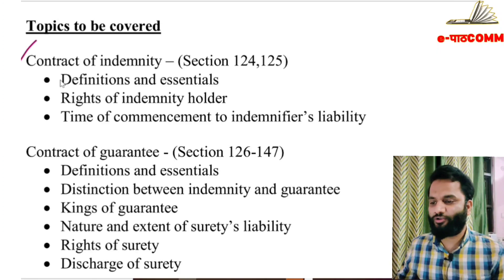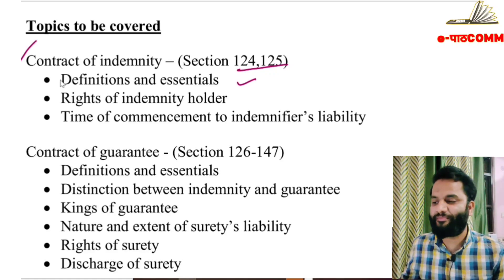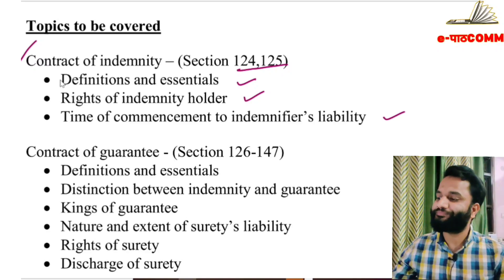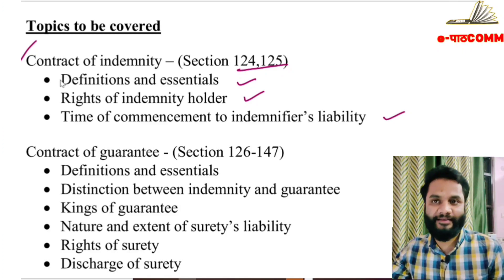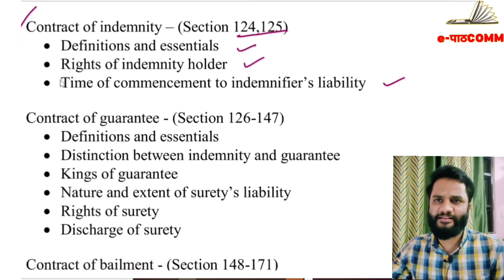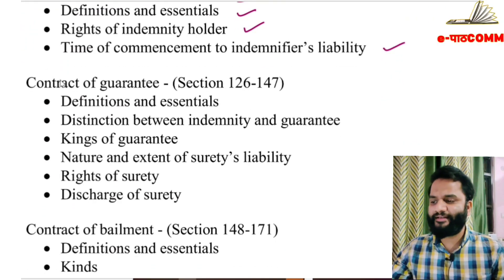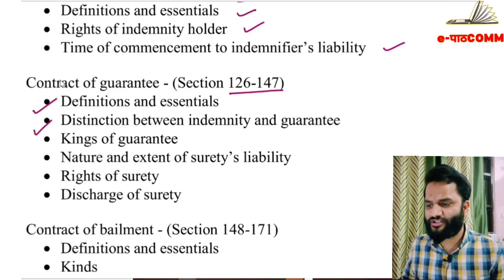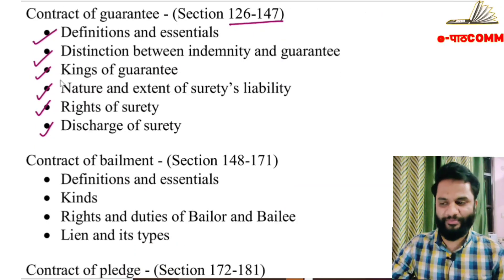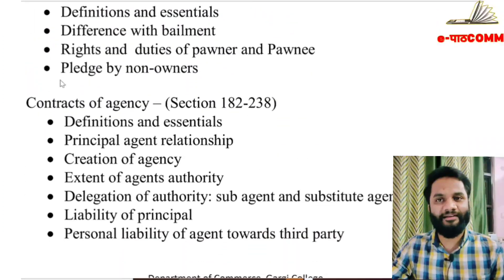Today we will discuss contract of indemnity and guarantee. Topics covered: Section 124 and Section 125 - definitions and essentials of contract of indemnity, rights of indemnity holder, and commencement of indemnifier's liability. Then contract of guarantee under Section 126 and Section 147 - definitions, distinction between indemnity and guarantee, kinds of guarantee, nature and extent of surety's liability, rights of surety, and discharge of surety.